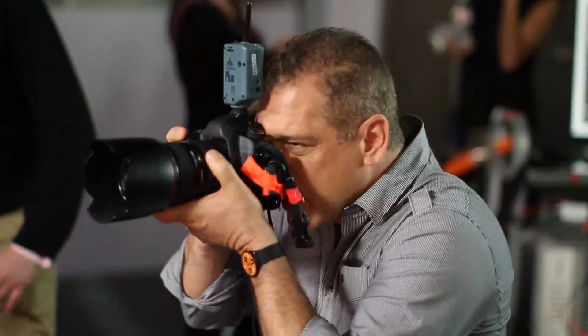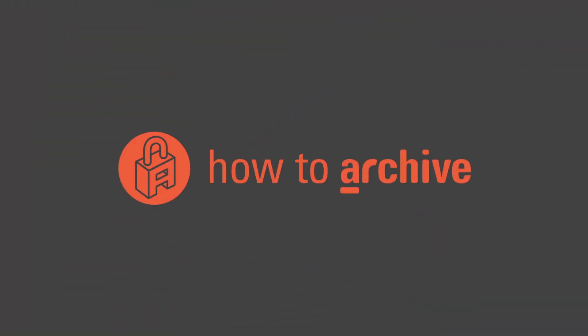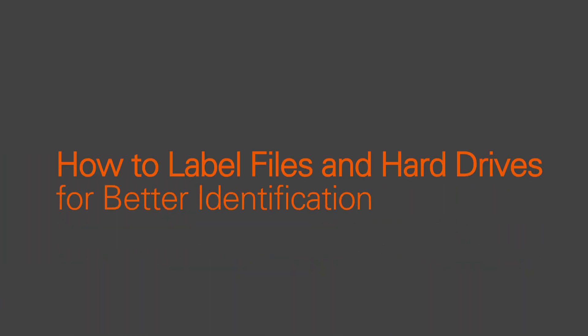Hi, I'm Michael Greco. I'm a professional photographer in Los Angeles, California. I've been shooting pictures of professionals, movie stars, and models for over 20 years. During that time, I've had to learn and invent ways to store, retrieve, and archive my work using different hard drives, flash drives, memory cards, and solid state drives. This is one of the short videos I made for HowToArchive.com to help show ways you can increase your workflow and make your storage solutions work for you. Today we are discussing how I label files and hard drives for better identification.